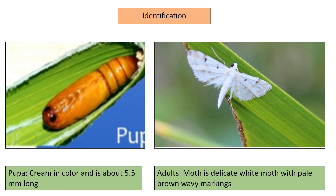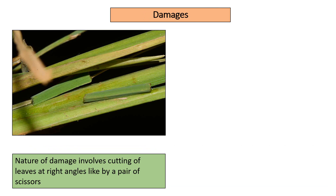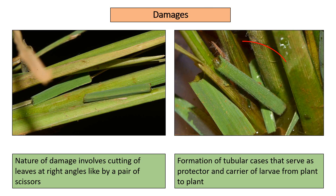The moth is delicate white with pale brown wavy markings. Damages. The nature of the damage involves cutting of the leaves at right angles, as if by a pair of scissors.